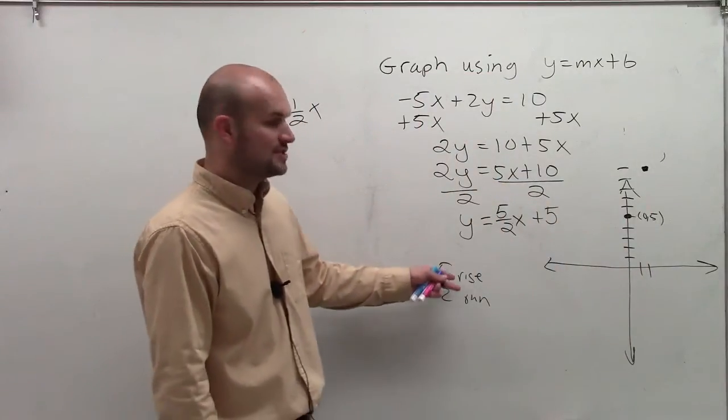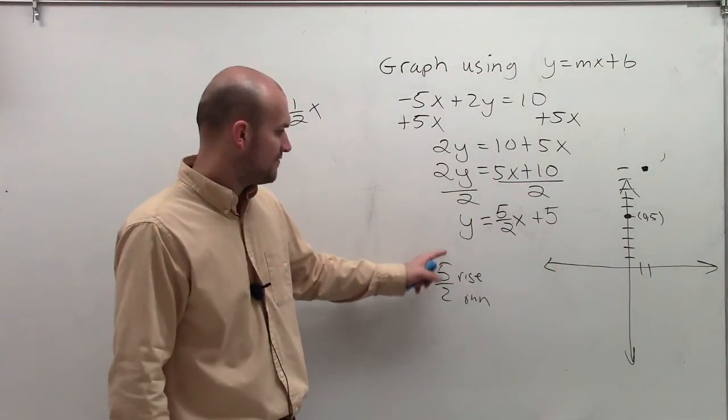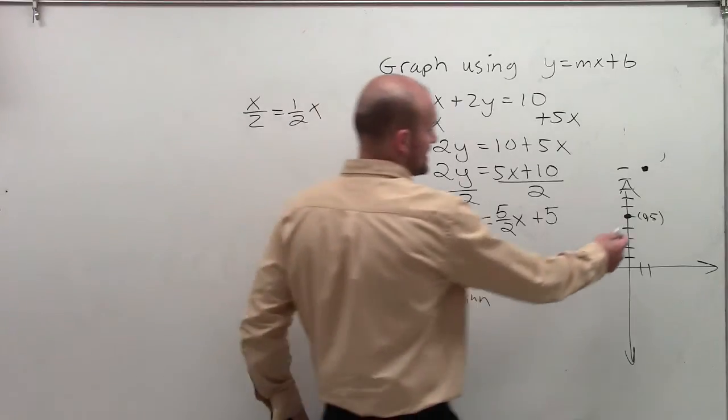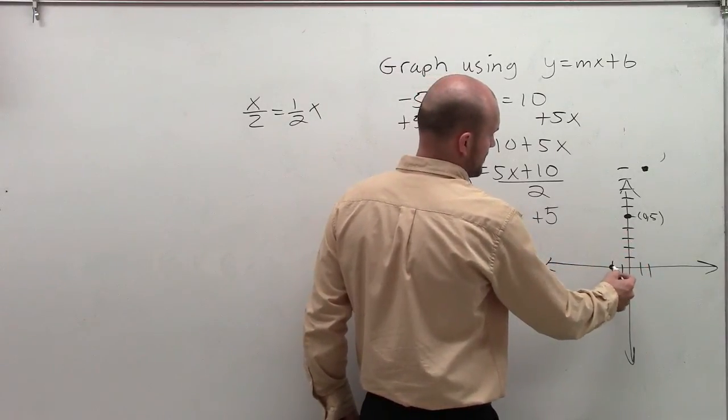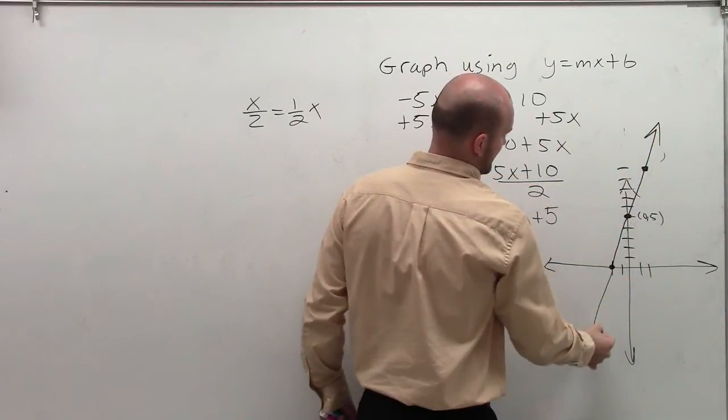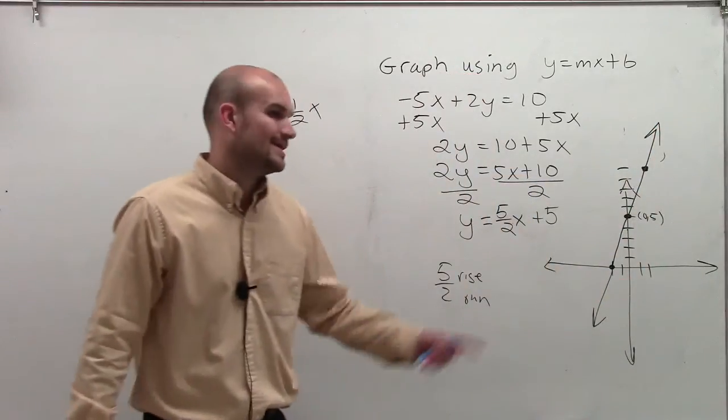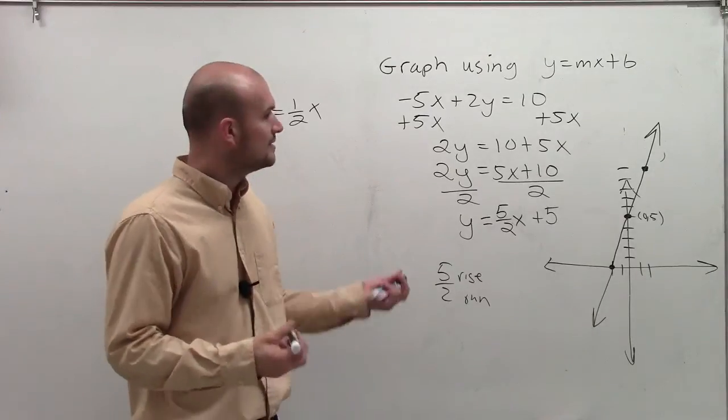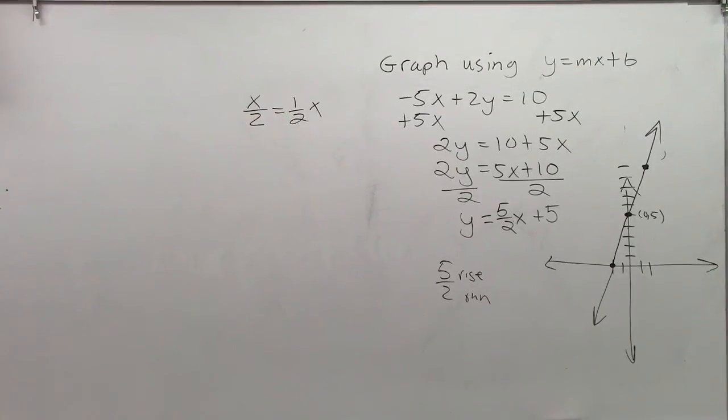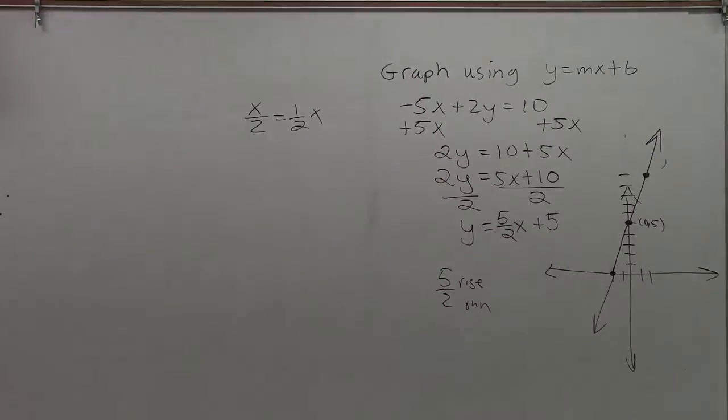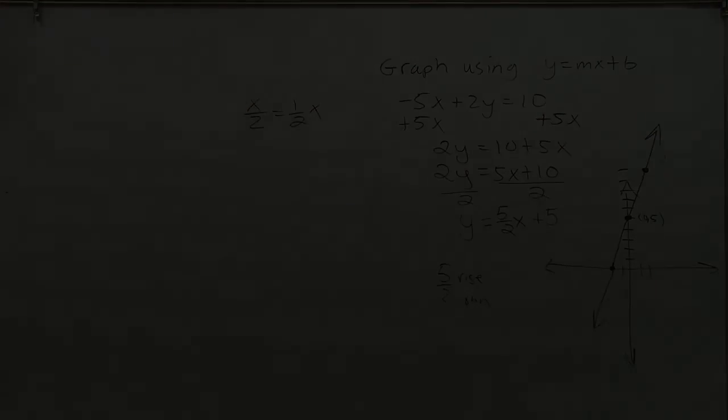However, you can also do the opposite. Instead of going up 5 to the right 2, you could also go down 5, 1, 2, 3, 4, 5, to the left 2. And you'll have a graph that's going to look something like that. You can see it's the exact same thing. So really, the difference depends on your strength and what you understand.